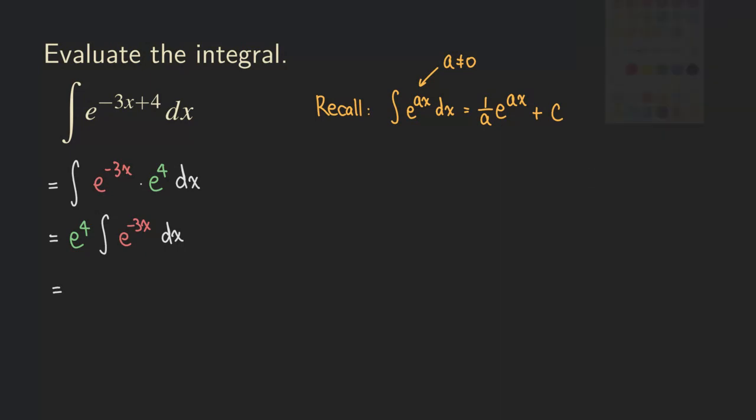That part is really just reversing the chain rule. So we get e to the fourth and then times e to the negative three x. And what we need to multiply in the front would be the reciprocal of the a. And in this case, the a is negative three. So we need to multiply by negative one over three, and then plus the constant of integration.